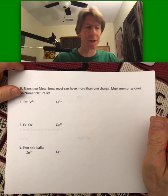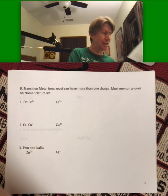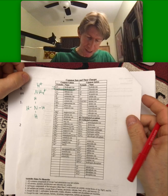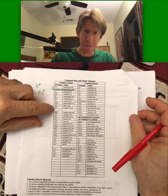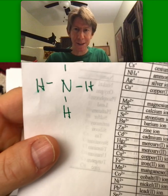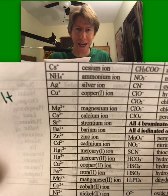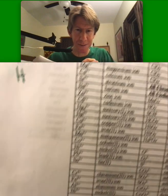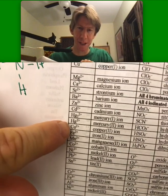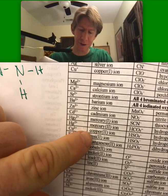Most can have more than one charge. I've got my nomenclature list right here. And on my nomenclature list, it says here's copper. Can you see that? Here's copper. And copper's got copper⁺, which is called copper one ion. It's also got copper²⁺, which is the copper two ion.